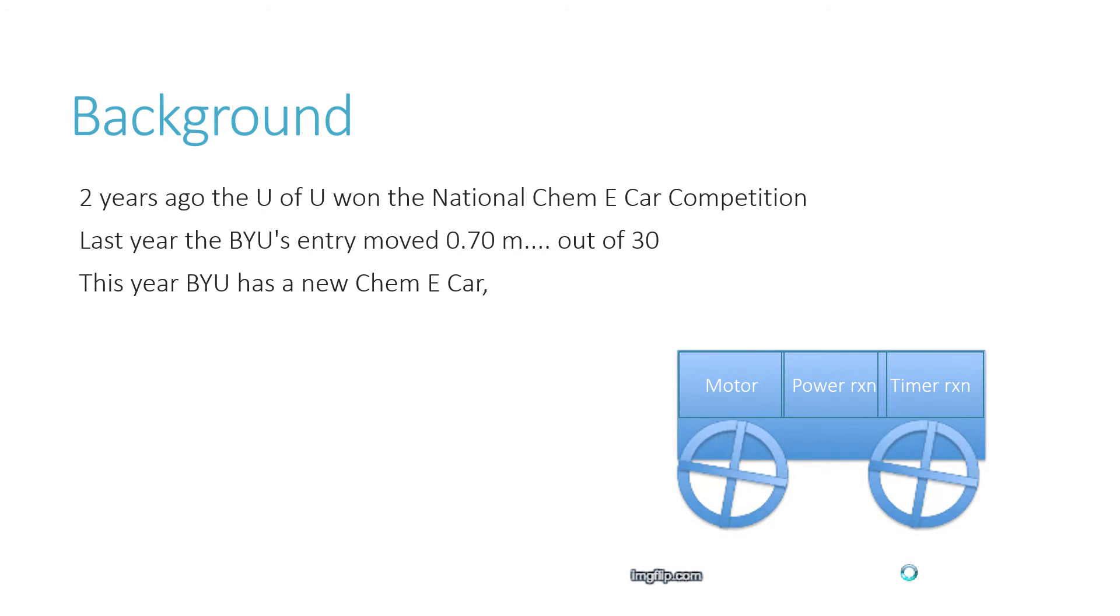Some background: two years ago, U of U won the National Chem E Car competition. Anything they can do, we can do better, so that's motivation for us. Last year, BYU's entry only moved 0.70 meters out of 30 because they had problems with the gearbox and the motor. This year, we have a new Chem E Car and the skills to control it.